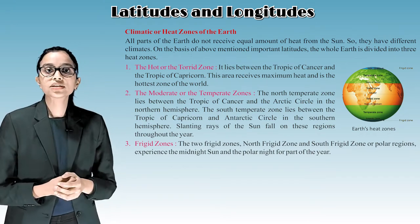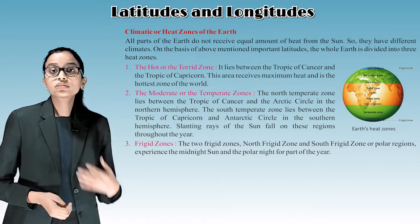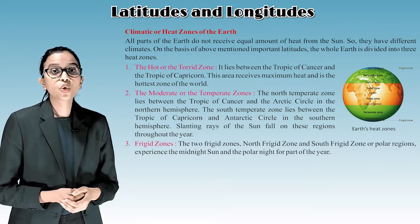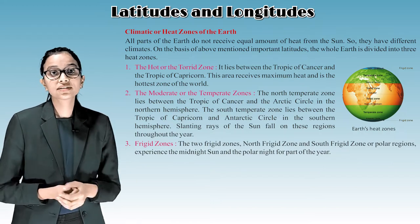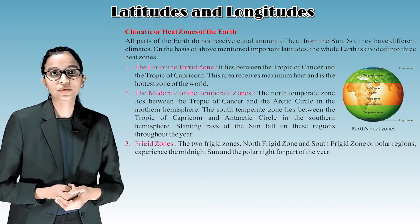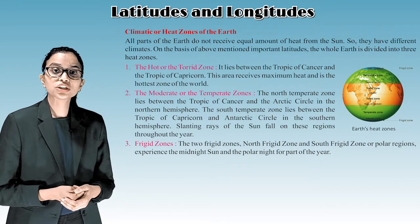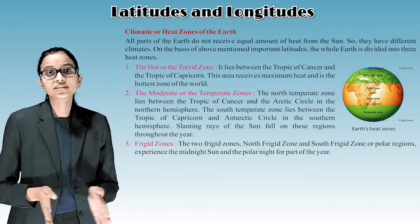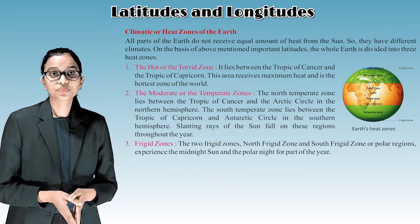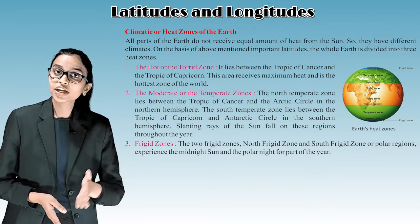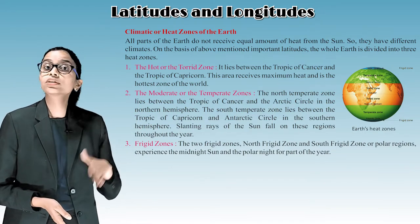The second heat zone is the moderate or temperate zone. The north temperate zone lies between the Tropic of Cancer and the Arctic Circle in the northern hemisphere. The south temperate zone lies between the Tropic of Capricorn and the Antarctic Circle in the southern hemisphere. Slanting rays of the sun fall on these regions throughout the year.